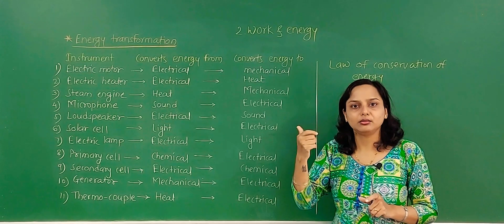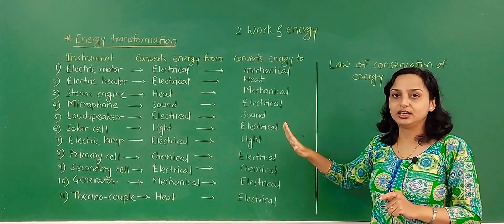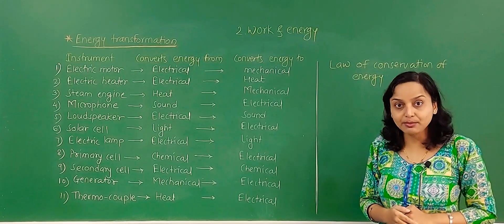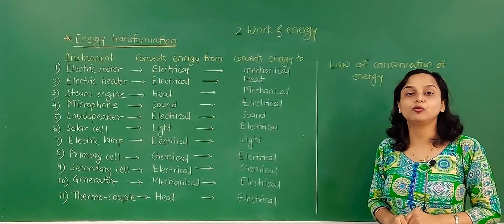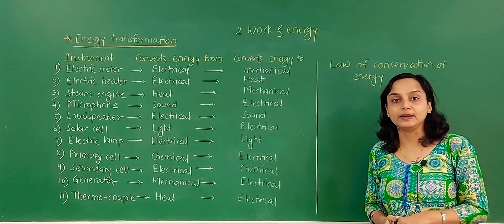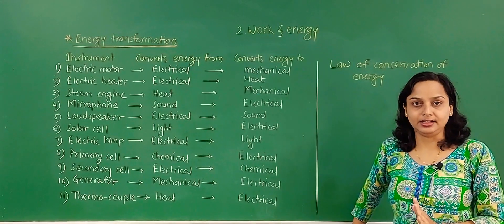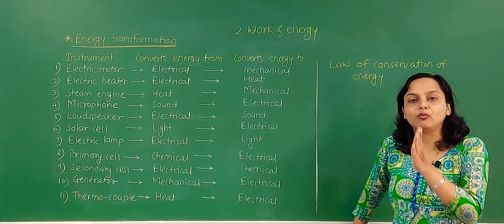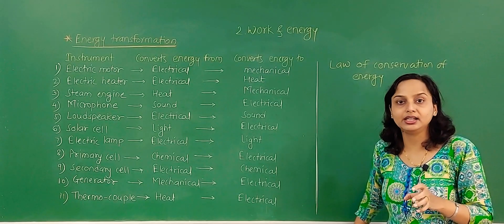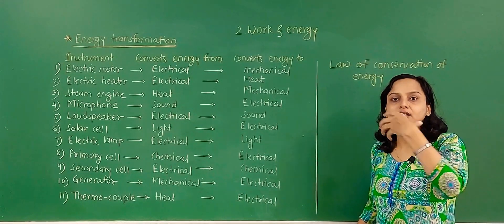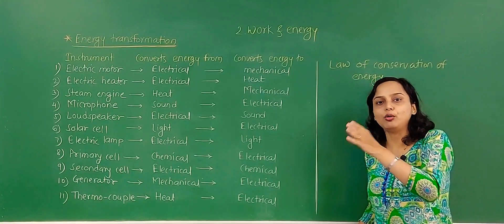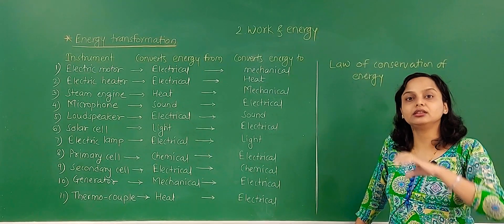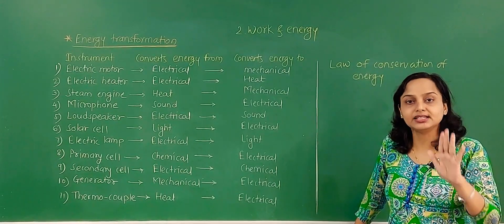So these are certain instruments in which we have seen that one type of energy gets converted into another type. This brings us to the law of conservation of energy. Energy cannot be created, nor can it be destroyed. It can be just transformed from one form into another form, and the total amount of energy in the universe always remains constant.